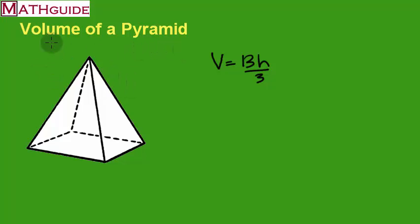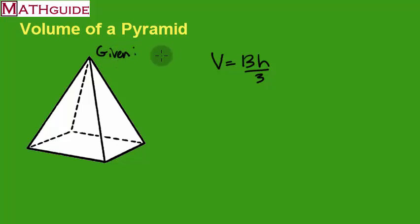We also have to have some given information for the specific dimensions of the pyramid we're dealing with. So let's say our given information is this: our height is 12 meters, and the length of the base, S, is equal to 10 meters.